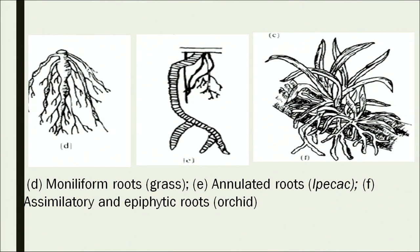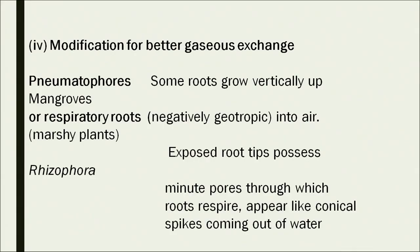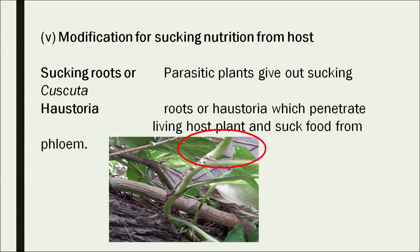Let's see more pictures. Figure D shows the moniliform root and the annulated root is in Ipecac. Assimilatory or epiphytic roots are found in some orchids — modification for better gaseous exchange. Pneumatophores are found in mangrove plants like Rhizophora, where they perform the function of respiration.